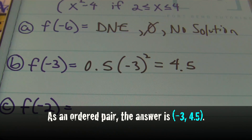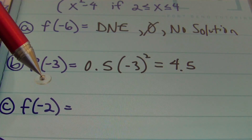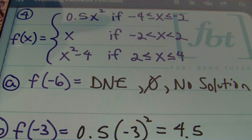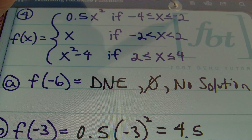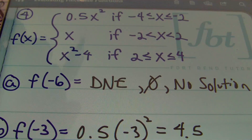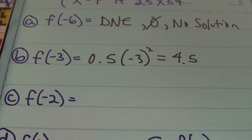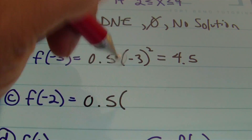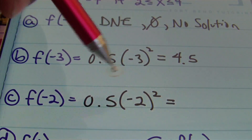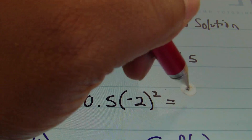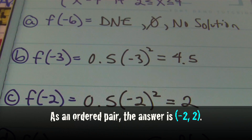For part c, x equals negative two. We use the first part of the function because the compound inequality includes less than or equal to negative two. Plugging in: five tenths times negative two squared. Negative two squared is positive four, and four times five tenths equals two. The answer for part c is two.